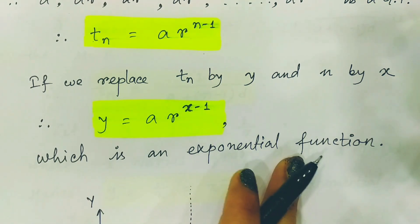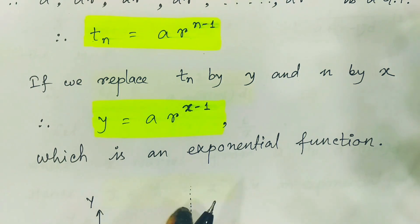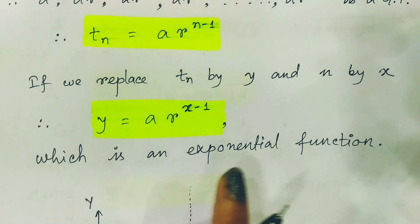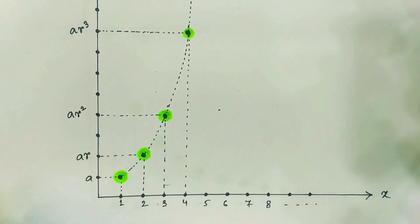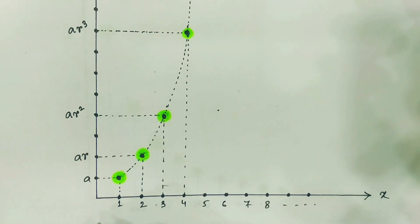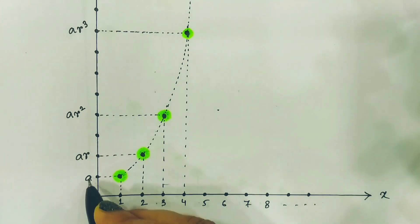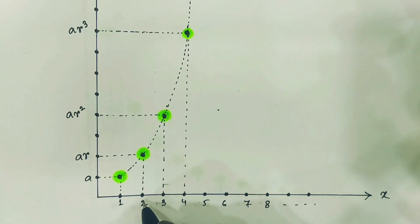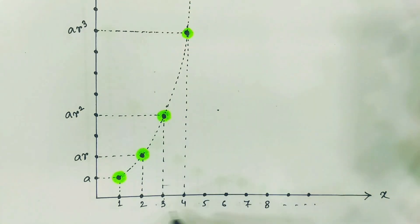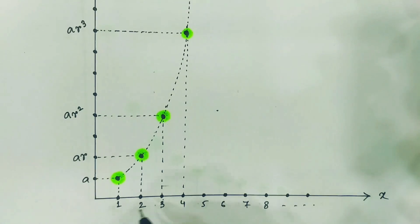Now if we replace tn by y and n by x, the expression becomes y equals a times r to the power (x minus 1), which is an exponential function. If you don't know what an exponential function is, write in the comment box and I will explain. So the GP corresponds to an exponential function. Plotting it on a graph, with n on the x-axis and tn on the y-axis, we get the values a, ar, ar², ar³ — tracing out an exponential curve.